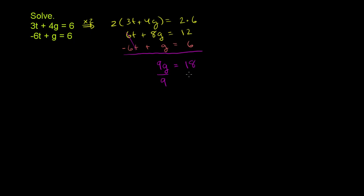Divide both sides by 9. And you are left with g is equal to 18 over 9, or 2. So we've solved for g.